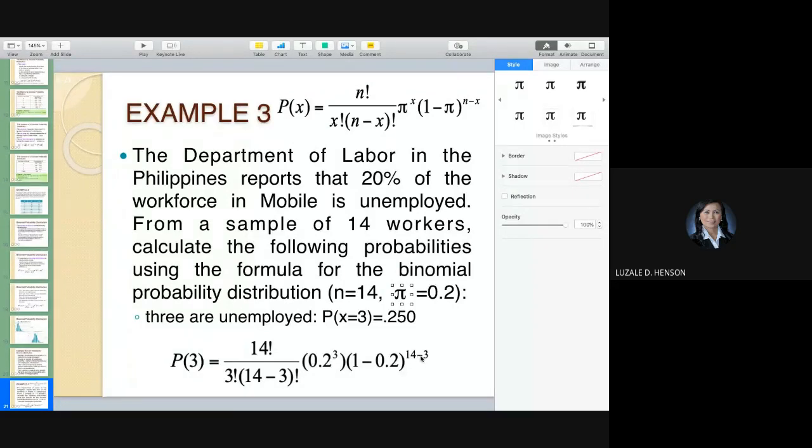What if the question is what if three are employed? That means the opposite of this. Because what is given is 20% of the workforce in Mobile is unemployed, but your concern is not the unemployed but the employed. Then you change this—it's not 0.2 you'll use, but 0.8. That's 1 minus 0.2 to get 0.8. Because what's being asked is employed. The problem might test you if you really understand how to apply what you learned in the concept of binomial. Here, 20% is unemployed, and the question is unemployed, so you stick with 0.2 as that's your probability of success.